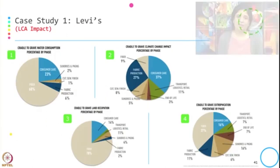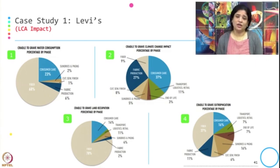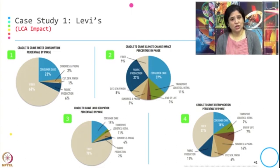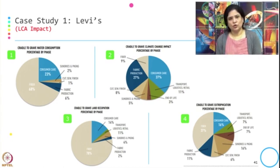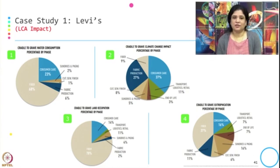Looking at the cradle-to-grave water consumption percentage by phase: the maximum water consumption is in fiber at 68%, and 23% in consumer care. Consumer care water consumption refers mainly to how much water we use to wash our jeans — this varies country by country based on washing patterns. Fabric production accounts for 6% of water consumption.